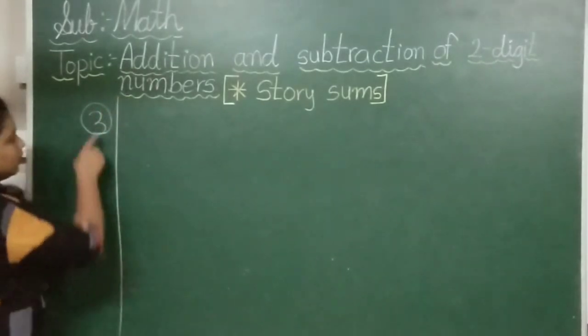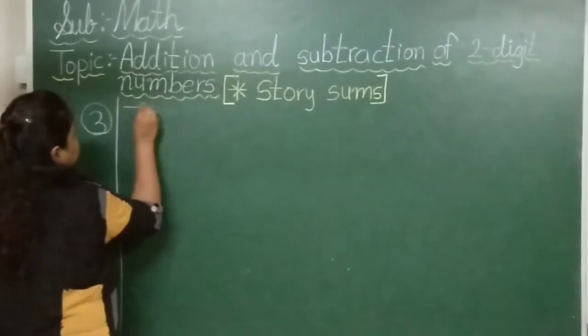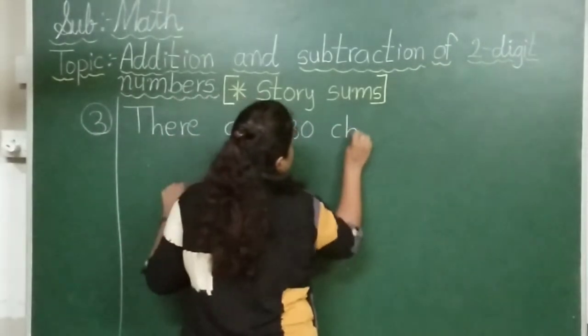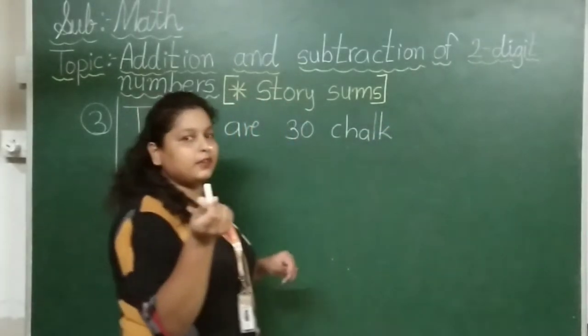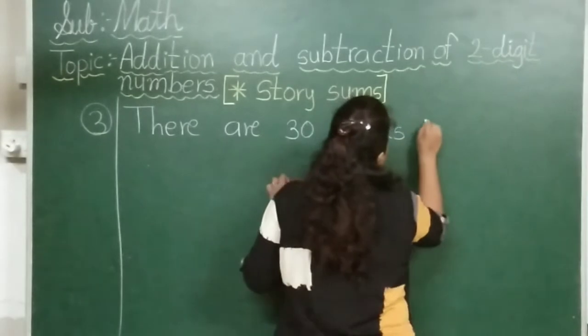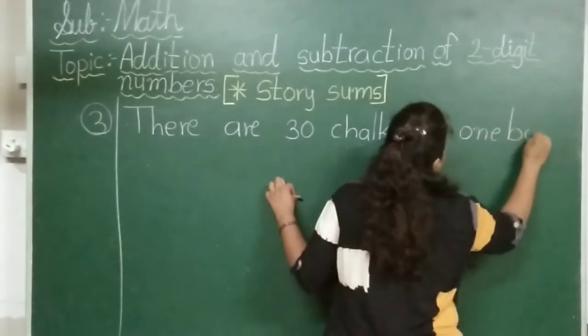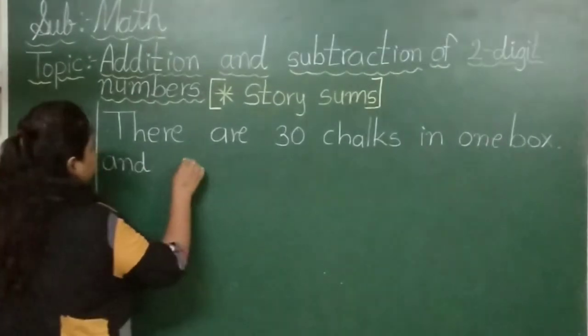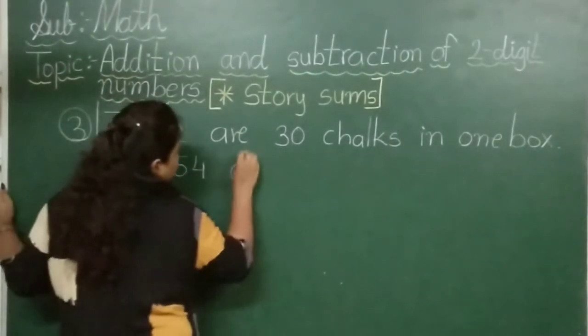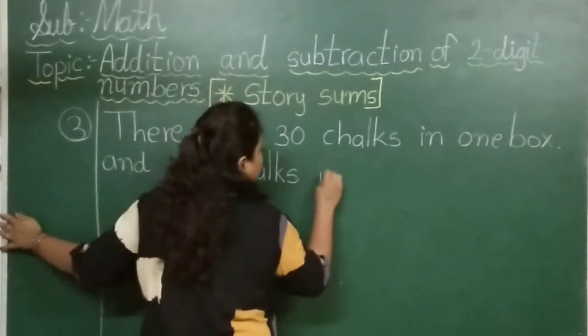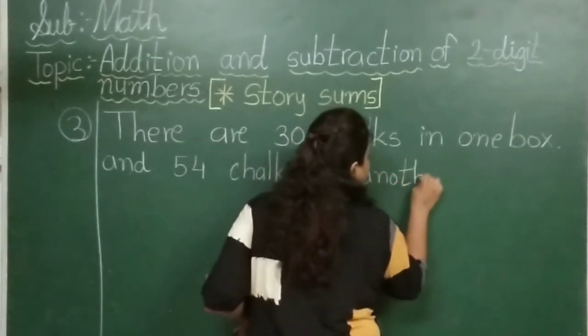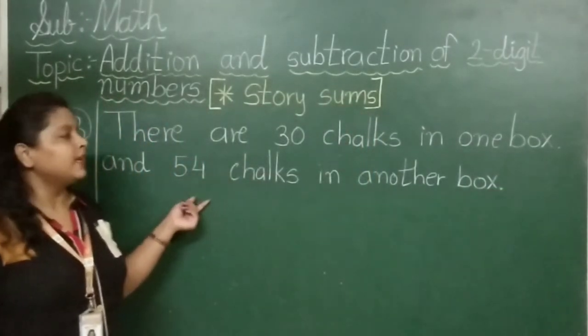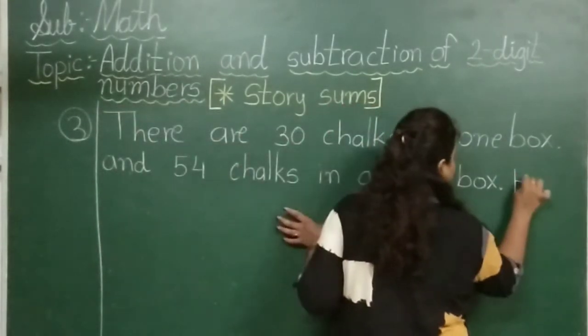There are 30 chalks in one box. One box has how many chalks? 3, 0: 30. And 54 chalks in another box. The second box has how many chalks? Yes, 54. So total how many chalks will we have? How many chalks are there?